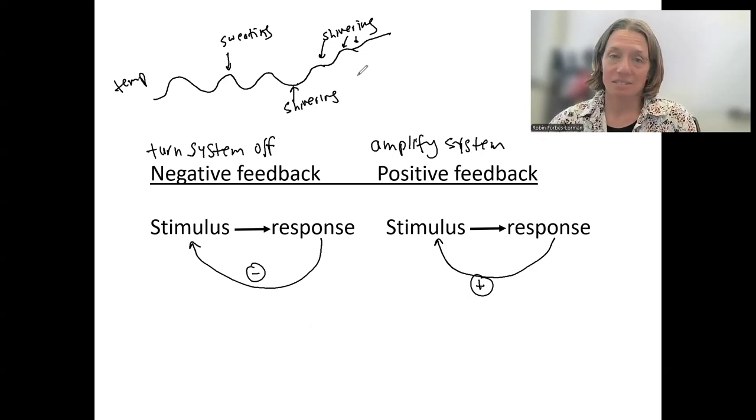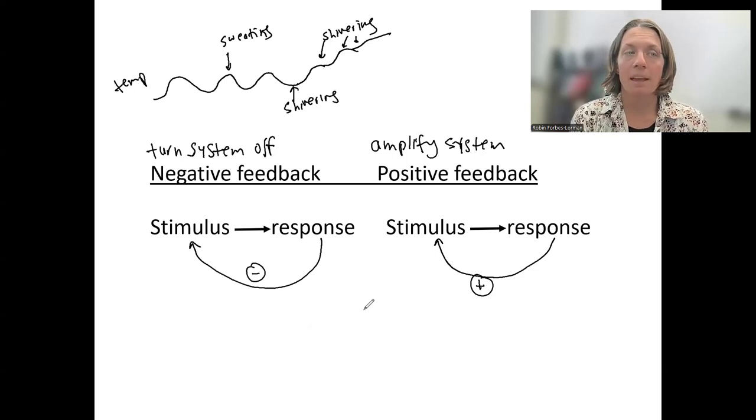So this is not an example of something that uses positive feedback. Things that do use positive feedback are childbirth, milk letdown, blood clotting, and other inflammatory responses. And actually the action potential is another one, but it's pretty rare.